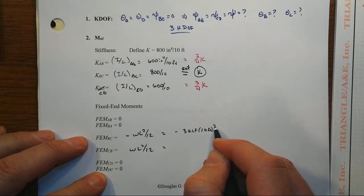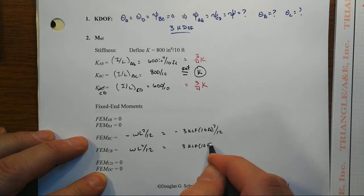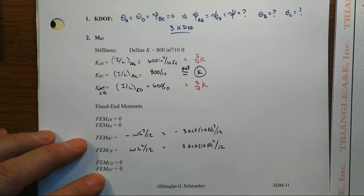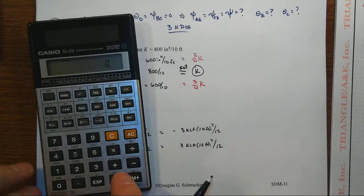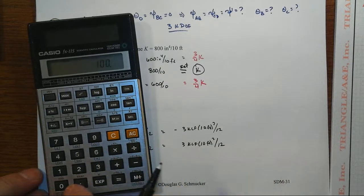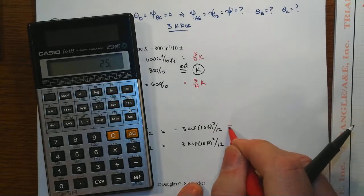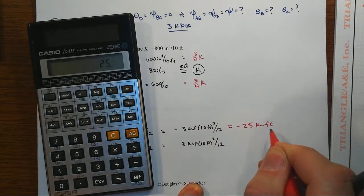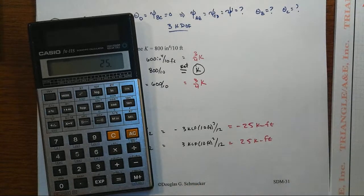And the other one is going to be the positive version of that. And that will turn out to be 3 times 100 divided by 12, or 25 plus or minus for those two fixed-end moments.